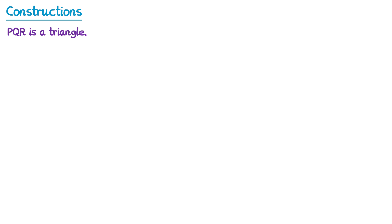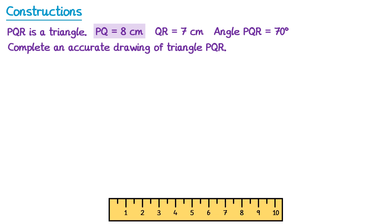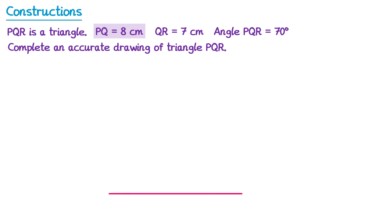What if we're asked to construct another triangle PQR, and we're told that PQ is 8, QR is 7, but rather than giving us another side, we're given an angle — angle PQR is 70 degrees. For a question like this, it might say 'complete an accurate drawing of the triangle PQR'. We'll start by drawing the longest side, so PQ which is 8 centimetres. We take a ruler and draw an 8 centimetre line, and label it as PQ.